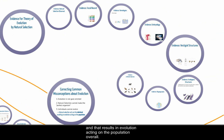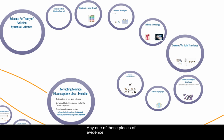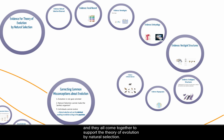The theory of evolution by natural selection is called a theory because it has a large body of evidence. Any one piece of evidence might not be enough to support an entire theory, but these pieces come from vastly different areas and they all come together to support the theory of evolution by natural selection.